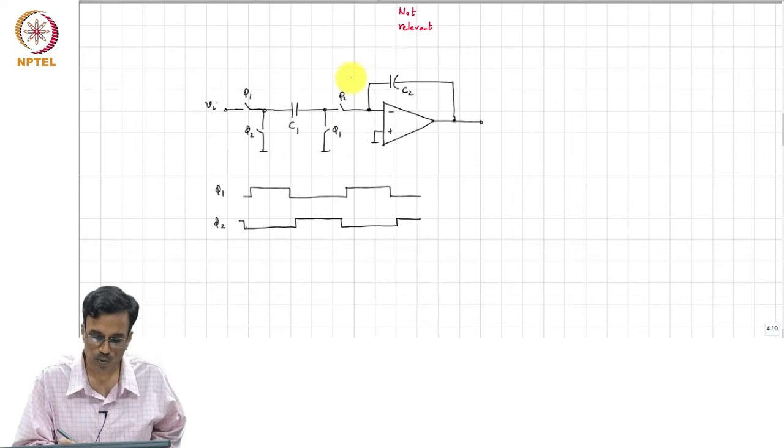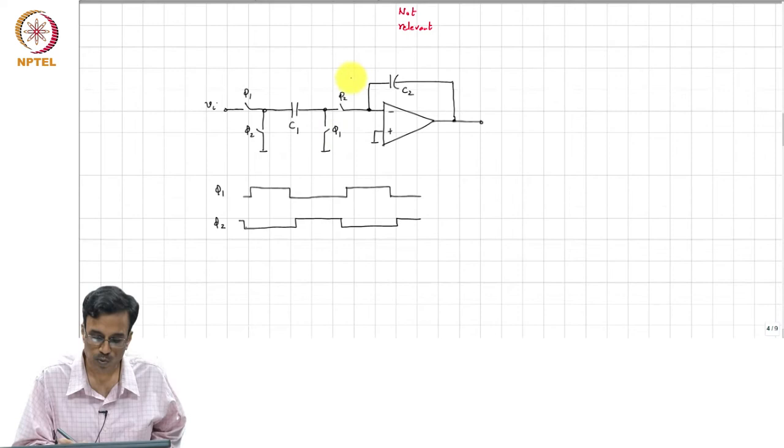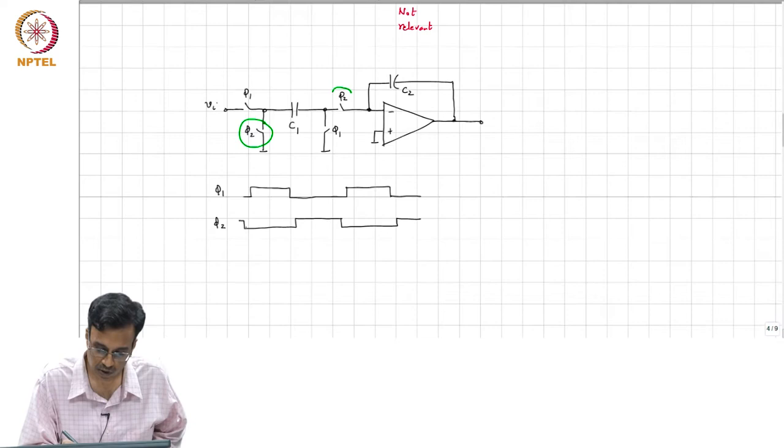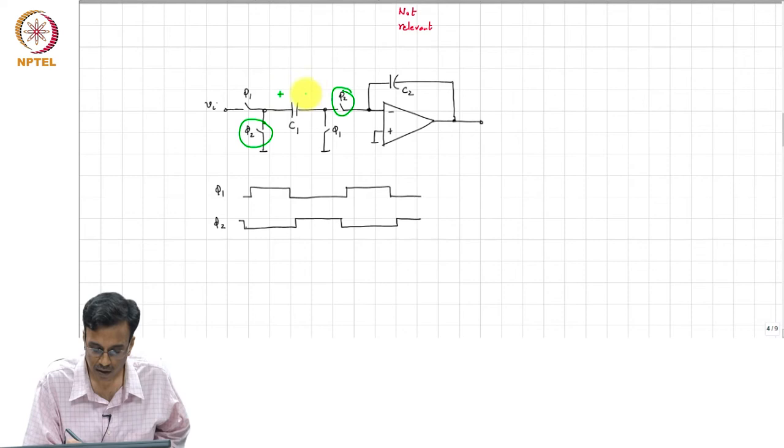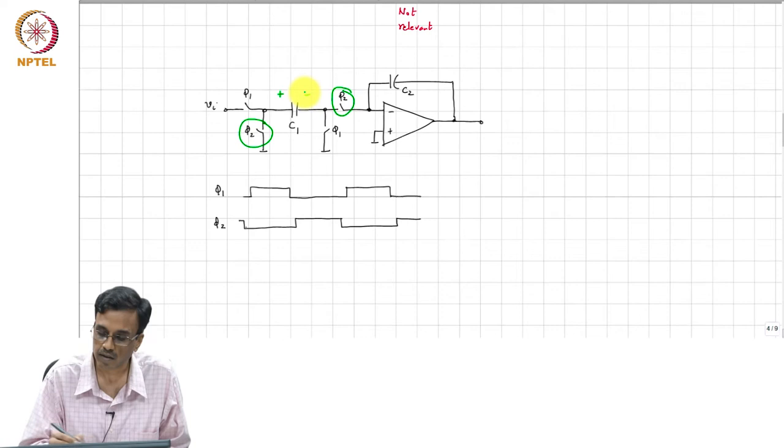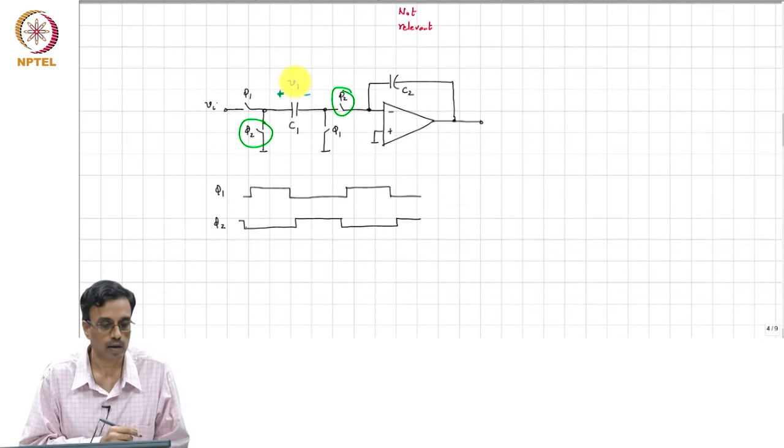These switches are off and the voltage across the capacitor is simply V_i.